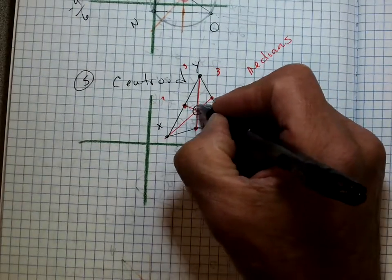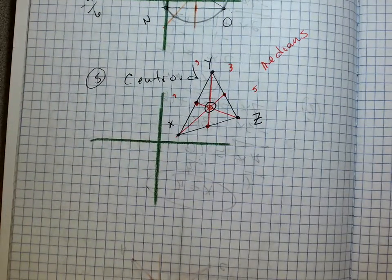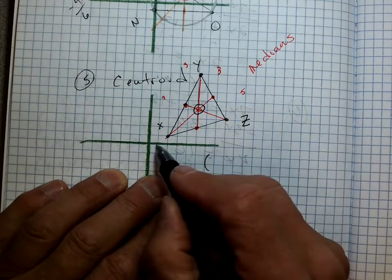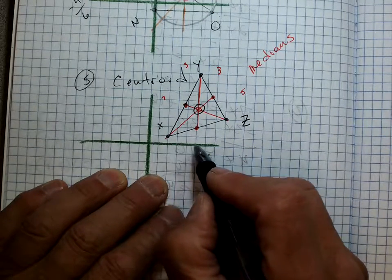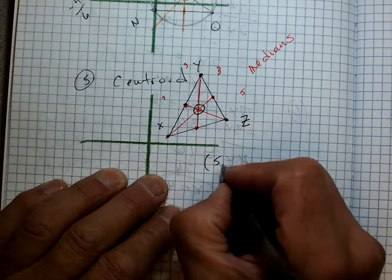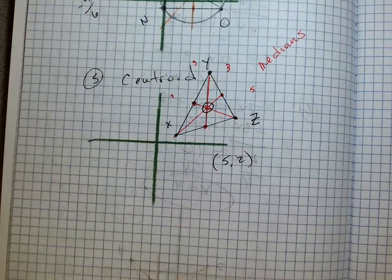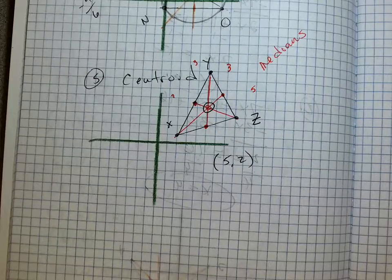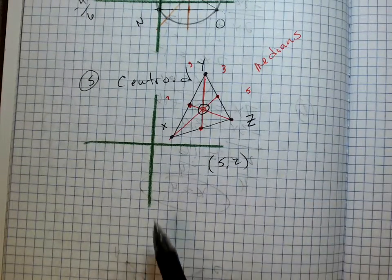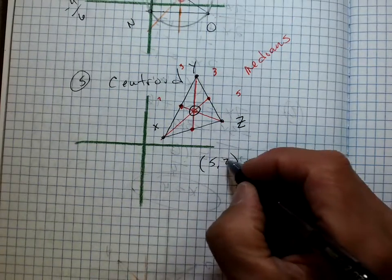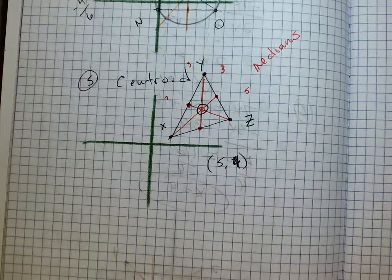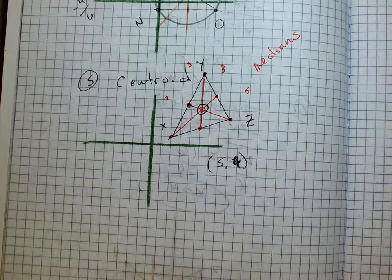What's the coordinate of the centroid? Counting it out, Cooper's right — it's at five, four. What makes the centroid special is the fact it divides each median into thirds.